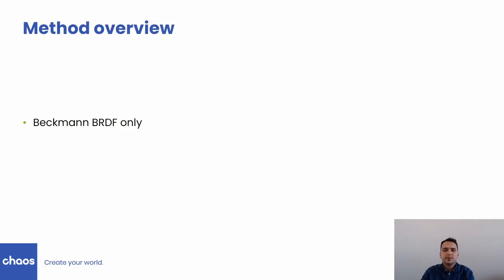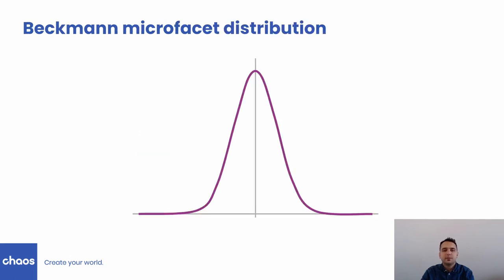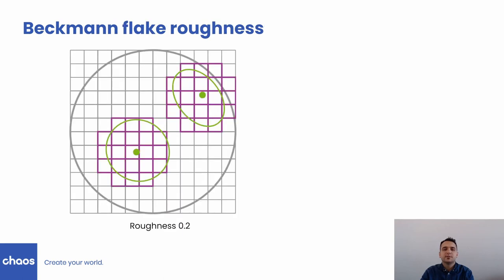Based on these ideas, we describe our efficient filtering algorithm. First, we restrict our method to the Beckmann BRDF. We quantize the normal map to create a map of bins, and based on the quantized map, we build an acceleration data structure that allows pre-filtering. The Beckmann distribution describes a surface with Gaussian distribution of slopes, and its tails are exponentially bounded. Therefore, we can assume that practically all microfacets are inside a range of 3 sigma, and we can truncate the tails. This choice significantly reduces the number of bins we must take into account for each BRDF evaluation.